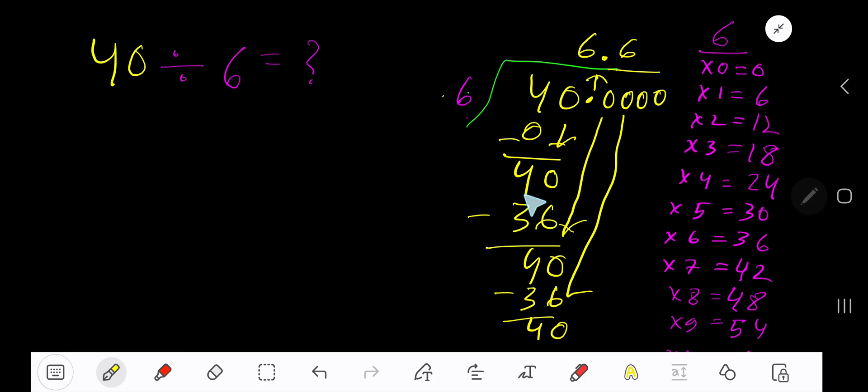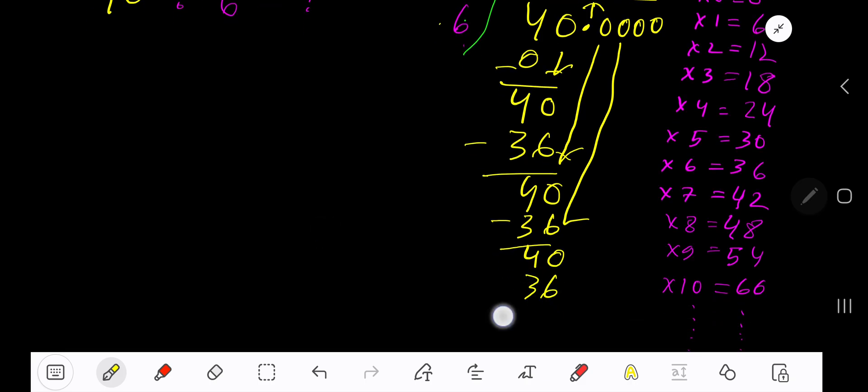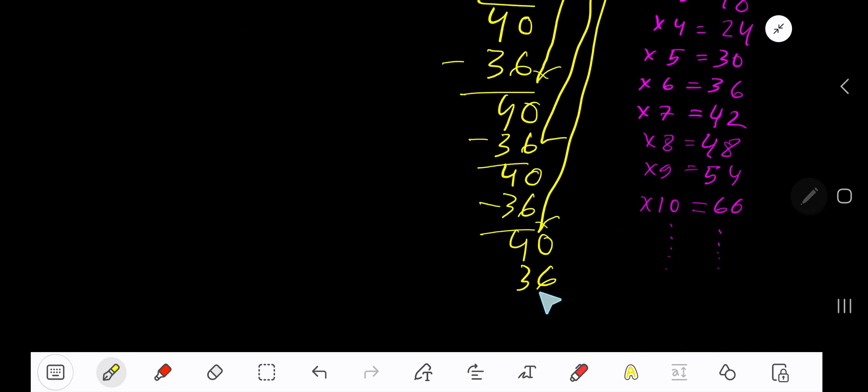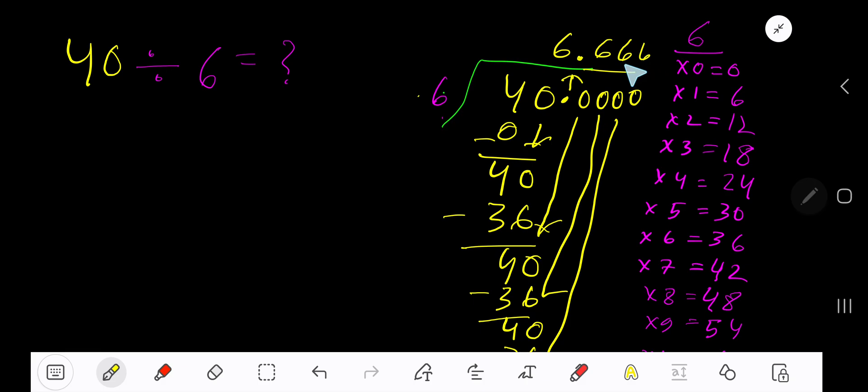6 goes into 40 how many times? Again 6 times. 6 times 6 is 36, subtract 4. You can bring down more zeros, but since we have gotten three places after the decimal, let's stop. So our answer is 6.666 dot dot dot.